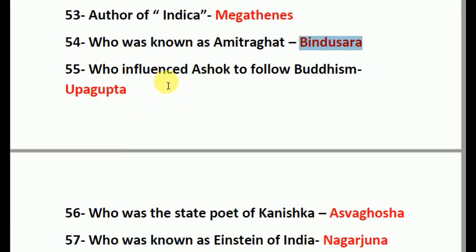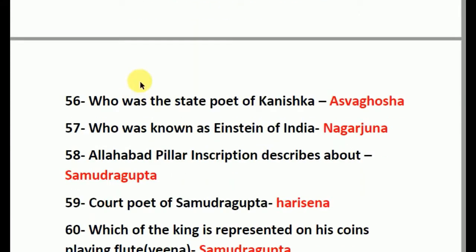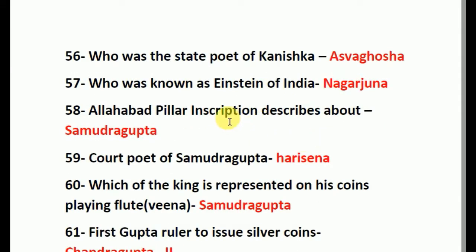Who influenced Ashoka to follow Buddhism? The answer is Upagupta. Who was the state poet of Kanishka? The answer is Ashvaghosha. Who was known as the Einstein of India? The answer is Nagarjuna. The Allahabad Pillar inscription describes Samudragupta. Court poet of Samudragupta: the answer is Harishena.